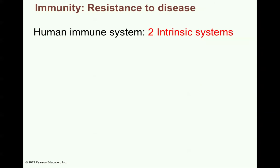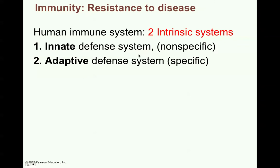What is immunity? Immunity is the resistance to disease. The human immune system has two basic intrinsic systems. The innate defense system is one that you're born with, but it's very nonspecific. Then you've got your adaptive defense system, and this is what the body learns over time as it encounters various pathogens or some type of a foreign cell that enters the body — the body will learn how to specifically fight that invader.